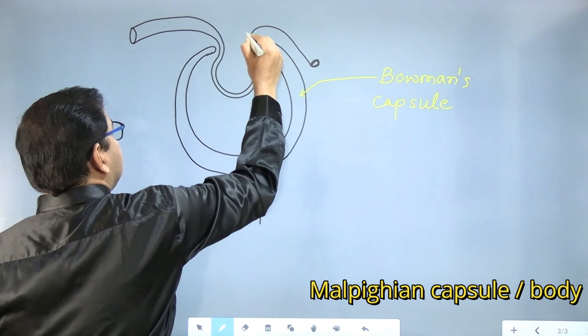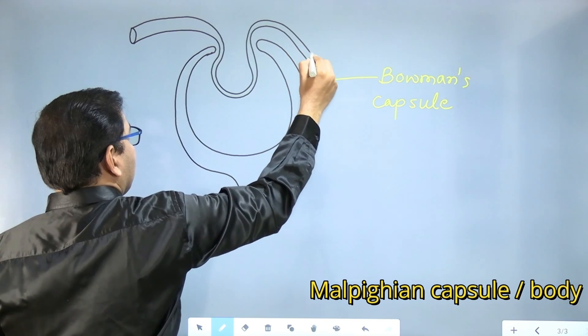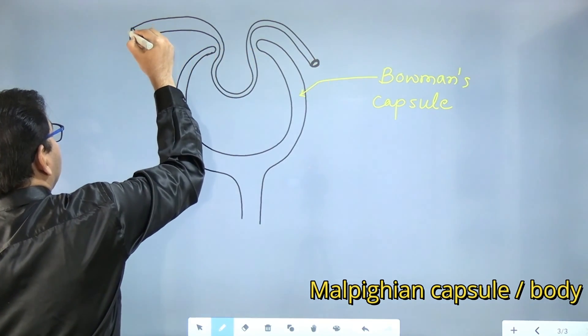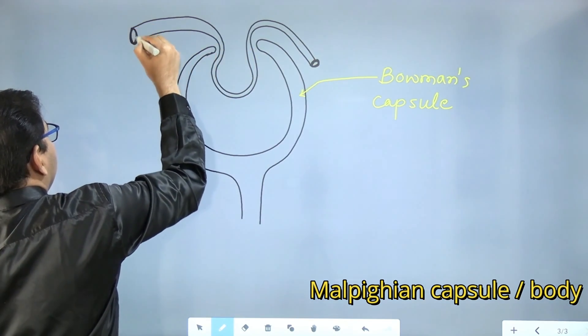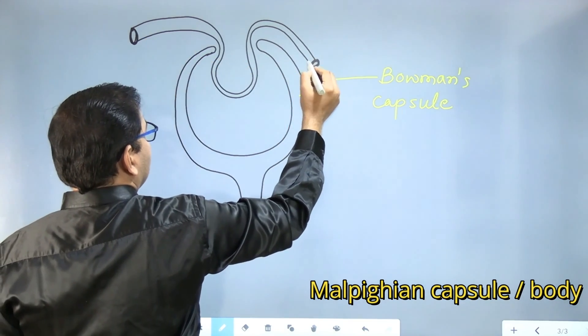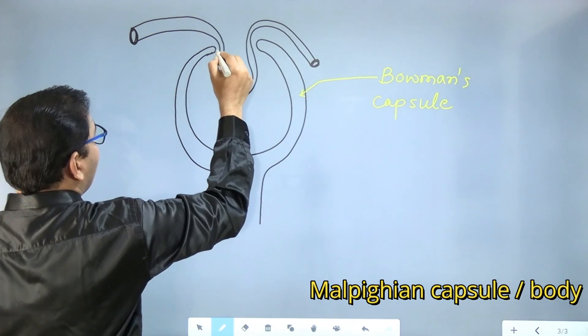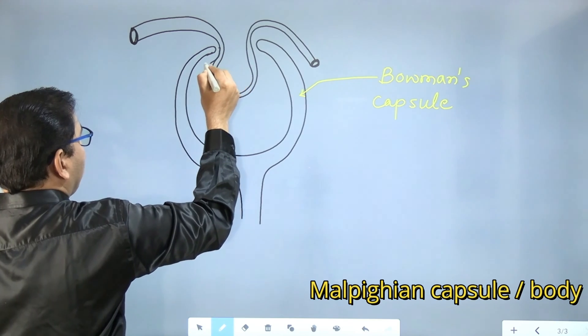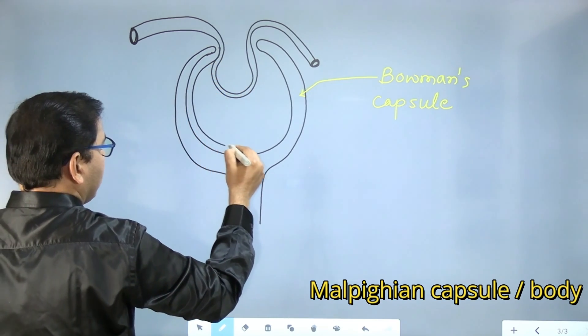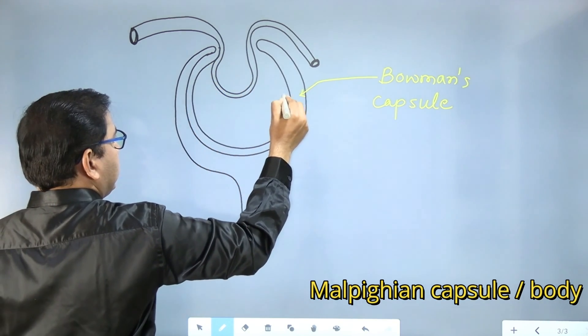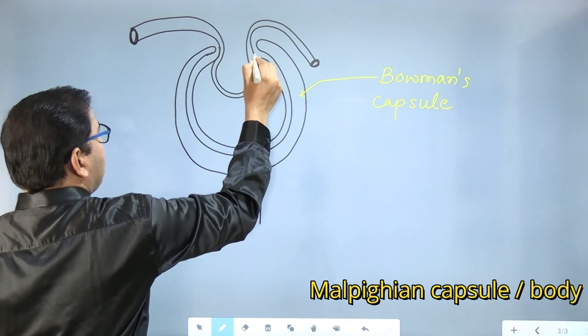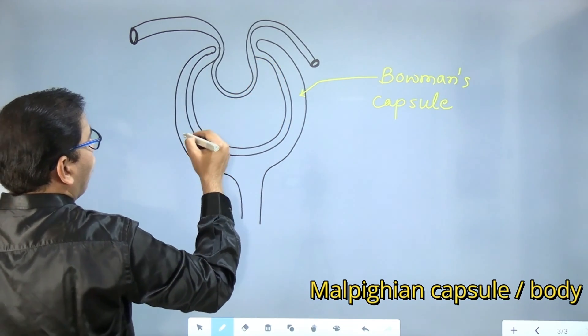You will get zero if the size of this blood vessel is not bigger and this is not smaller. Now look carefully how I am drawing this complicated part, a knot-like part is called a glomerulus.